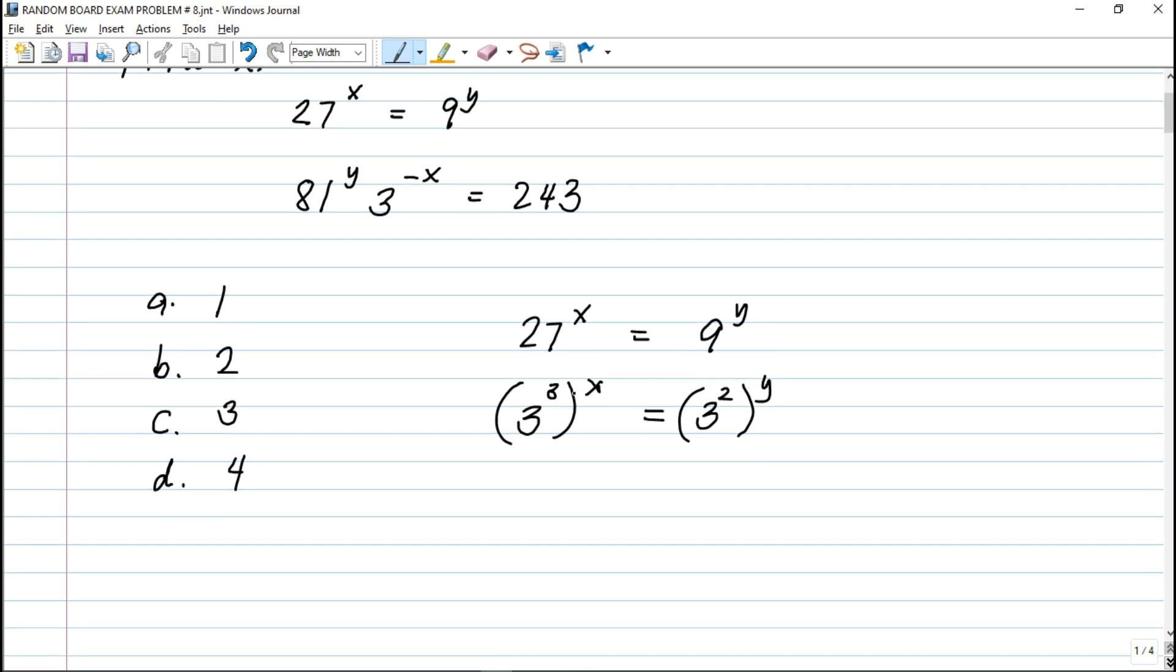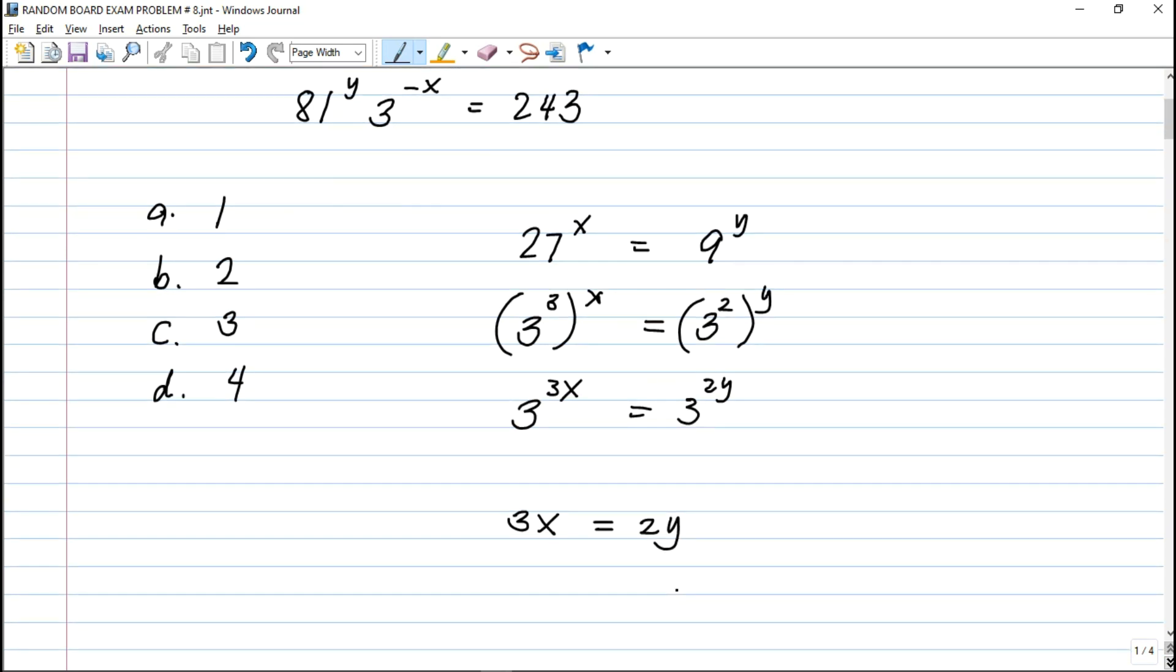Laws of exponent - we multiply the variable. So this is 3 raised to 3x equals 3 raised to 2y. Same base na sya. Therefore, we can actually equate the exponent. If 3 raised to 3x is equal to 3 raised to 2y, therefore, 3x is equal to 2y. This is our first equation. Y in terms of x, that is y is equal to 3 halves x. This is our first equation.